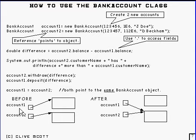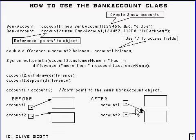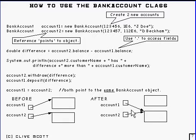account1 and account2 are, in effect, pointers to the objects. And that's why if you set account1 equal to account2, then after you've done that, they both point to account2. So if you go via account2 and modify some field, then if you look at it through account1, it will also be modified — and that's not a surprise, because they both point to the same thing.